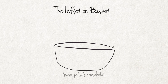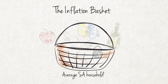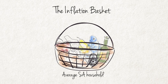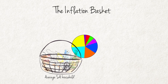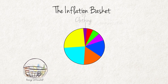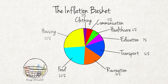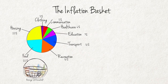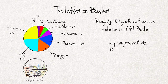The inflation basket. The composition and measurement of the CPI is not a simple matter, as it is necessary to make provision for the amounts people spend on different items. To allow for the differences in personal spending, a system of spending weights is used. Spending weights simply reflect the percentage of its income that an average South African household spends on different items, and as a whole, it is often referred to as the inflation basket. Roughly 400 goods and services make up the CPI basket, grouped into 12 major categories.